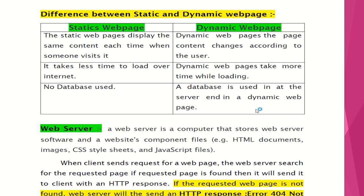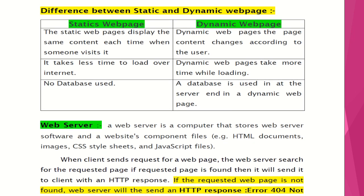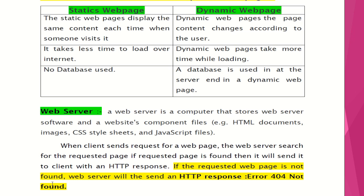No databases are used in static web pages, but a database is used in dynamic web pages. What is a web server? A web server is a computer that stores web server software and a website's component files, such as HTML documents, images, CSS stylesheets, and JavaScript files. When a client requests a web page, the web server searches for it. If the requested page is found, it is sent to the client; otherwise, it sends an HTTP response with error 404 Not Found.